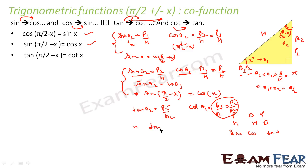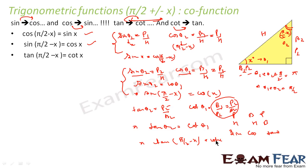Thus we can say tan(theta 2) equals cot(theta 1), or tan(π/2 minus x) equals cot(x). So when we have π/2 ± x: sin changes to cos, cos changes to sin, tan changes to cot, and cot changes to tan.